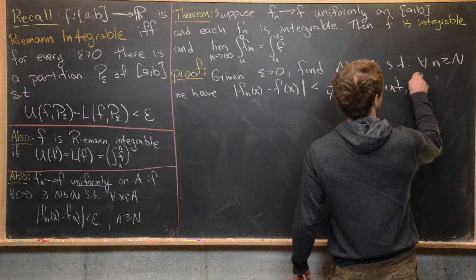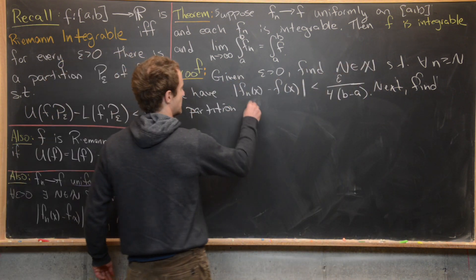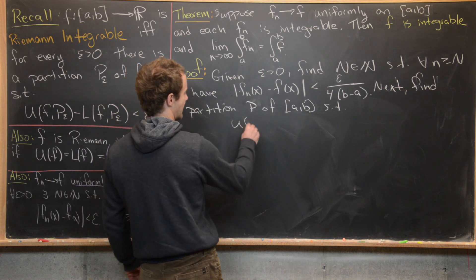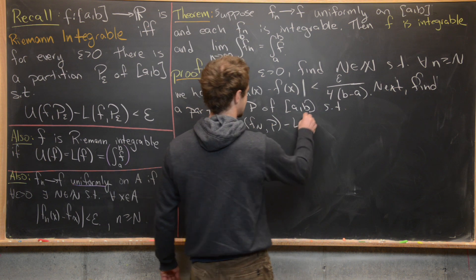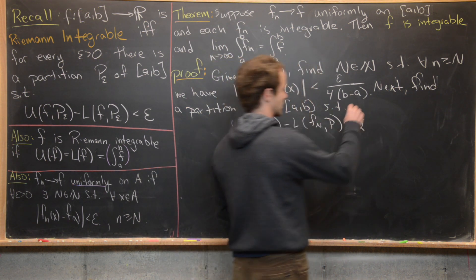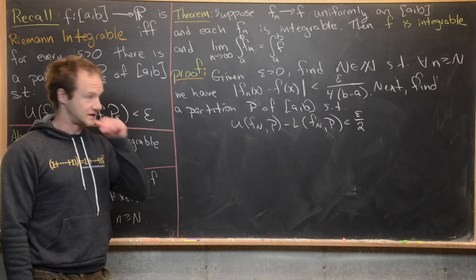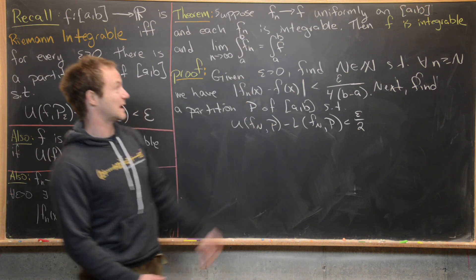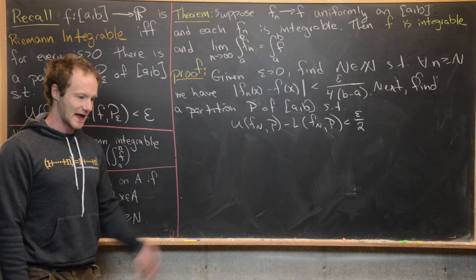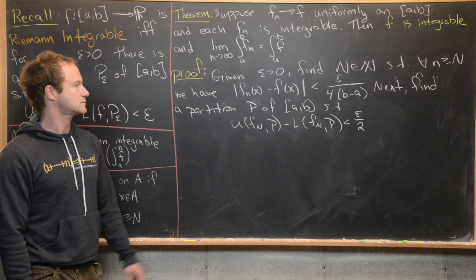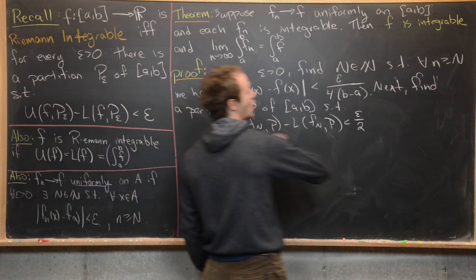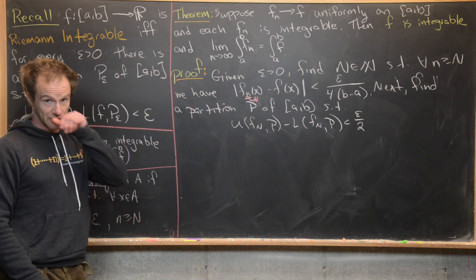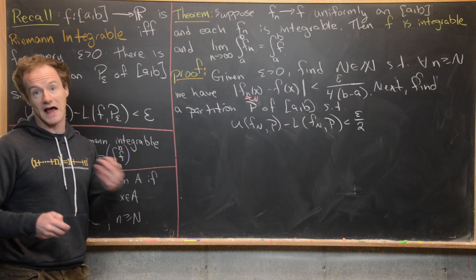Next, we find a partition P of [A,B] such that U(f_N, P) − L(f_N, P) < ε/2. We can do this because we know f_N is integrable. This inequality holds for all n ≥ N, including n = N — and that's actually an important thing to notice before we launch into the main argument.